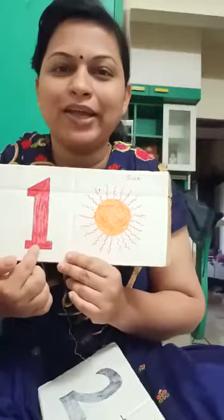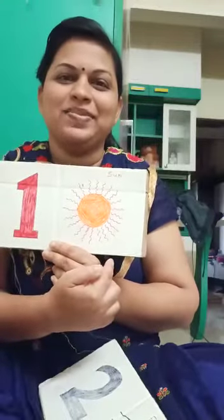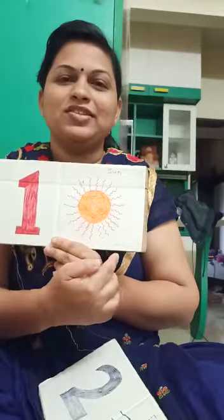This is 1. What is this? Advik, Abhidya — what is this? 1. 1, son. Can you see it properly? It's 1, son. How many pictures are there? Only 1.